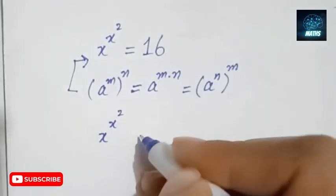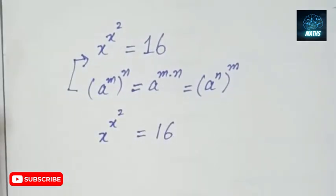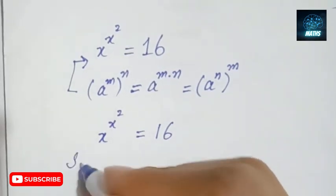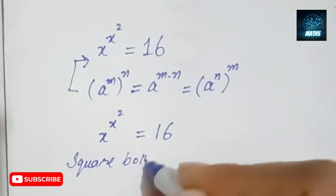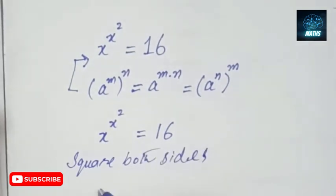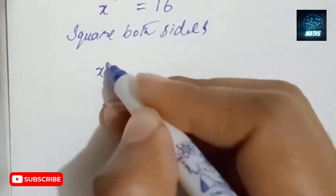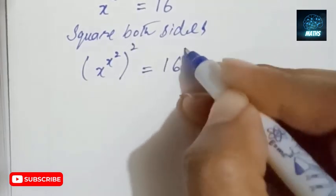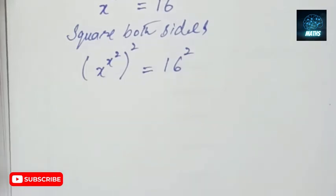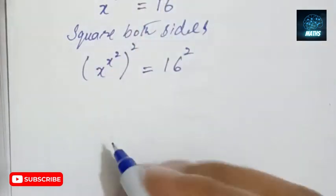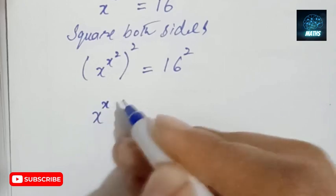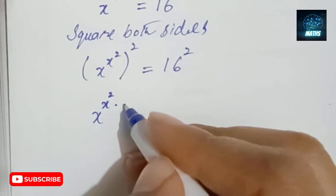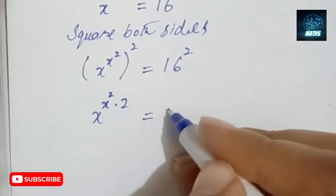So I will use this law by solving this exponential equation: x to the power x to the power 2, which equals 16. Here I will take the square on both sides. So x to the power x to the power 2, squared, equals 16 squared. Next, I can write it by using the law as x to the power x to the power 2 times 2, equals 16 squared.